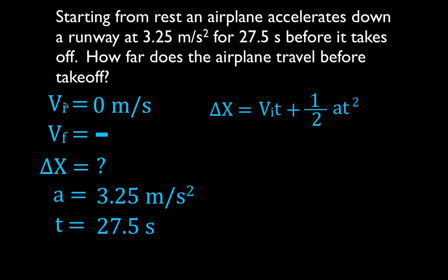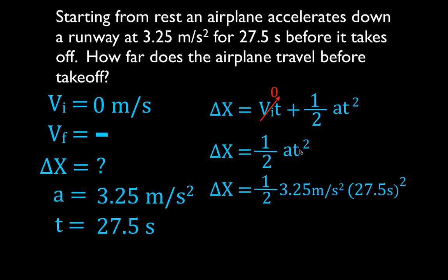This equation also includes initial velocity, and since initial velocity is zero, the term with initial velocity is zero. The equation simplifies to: delta x equals one-half times a times t squared. Plugging in the values: delta x equals one-half times 3.25 times 27.5 seconds squared. Square only the 27.5, and you get that the plane travels 1,229 meters. Follow those steps and let's go on to the next example.